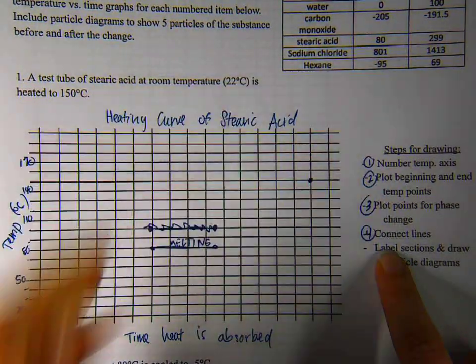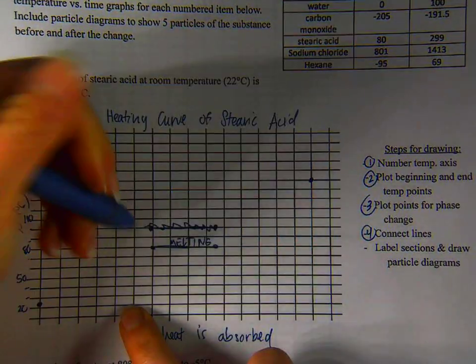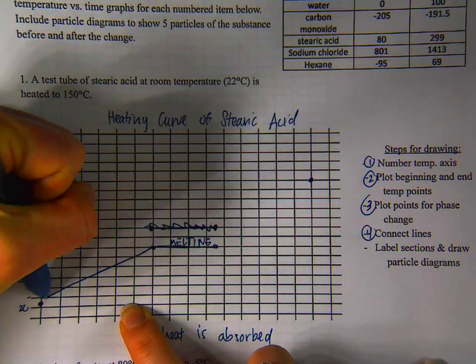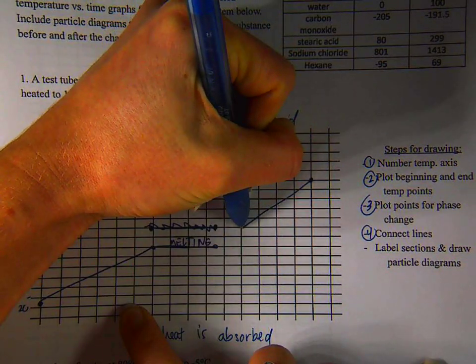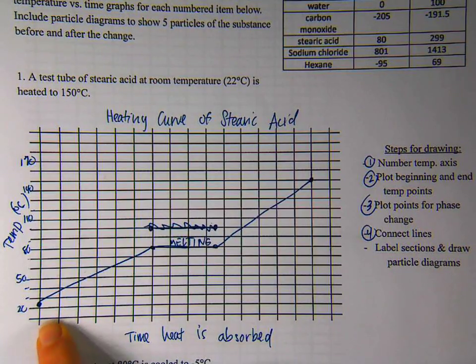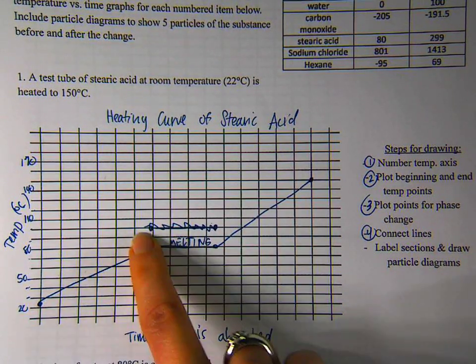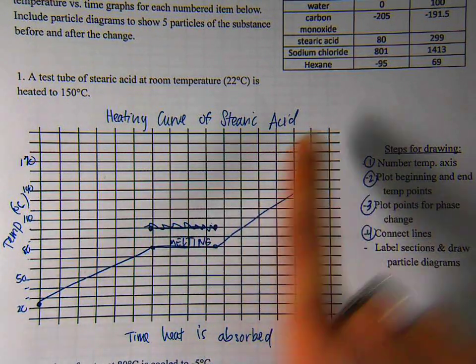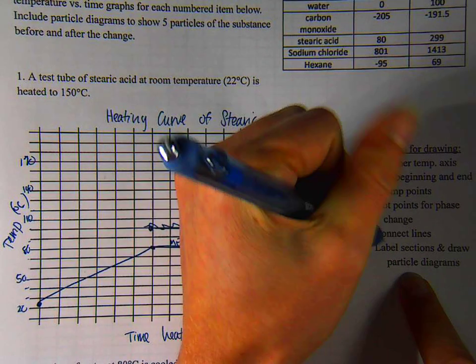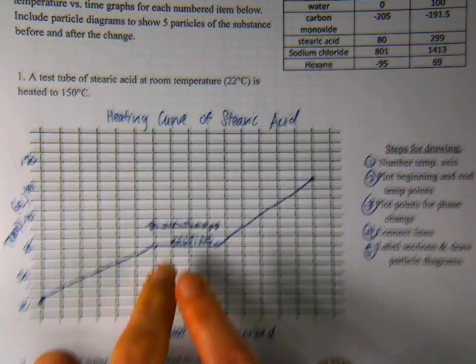I'm going to connect my dots with lines. So I would use a ruler if I choose to connect these two points and these two points. Now I can see that my stearic acid is heating up. The temperature flattens out as it melts. And then it heats up again.